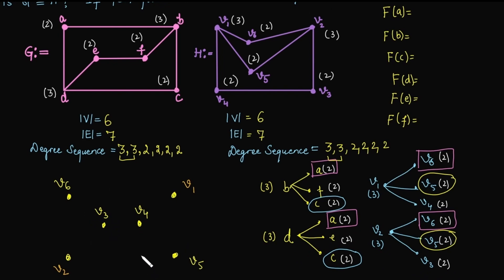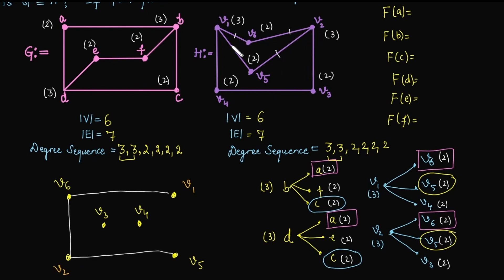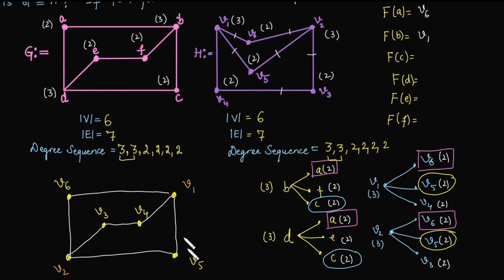Now we verify whether the mapping is correct by checking the edges of graph H one by one. There is an edge between V1 and V6 — covered. V6 and V2 — covered. V5 and V2 — covered. V1 and V5 — covered. V2 and V3 — covered. V4 and V3 — covered. The last edge between V1 and V4 — covered. We are getting exactly graph G, so the mapping is correct: A maps to V6, B to V1, C to V5.